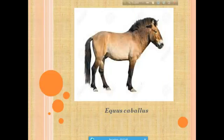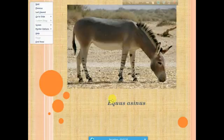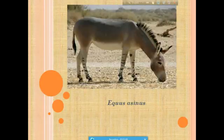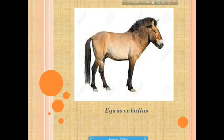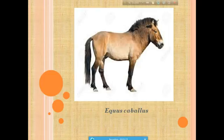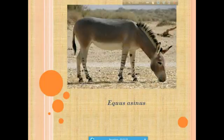Here I put some pictures, i.e. Equus caballus and Equus acinus. We can see that Equus caballus and Equus acinus are categorized in the same genus, Equus, but in different species because they are very different from each other. That is why they are placed in the same genus but in different species.